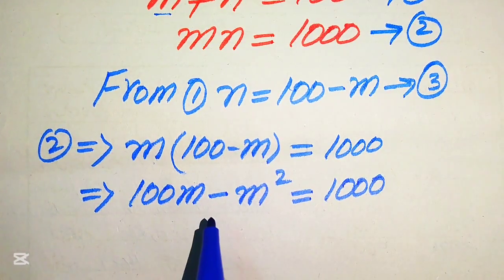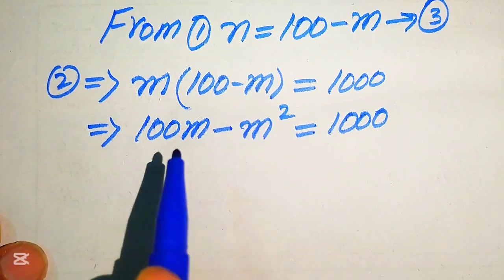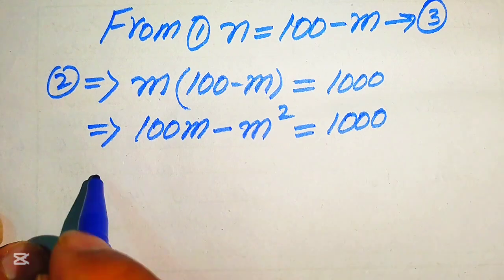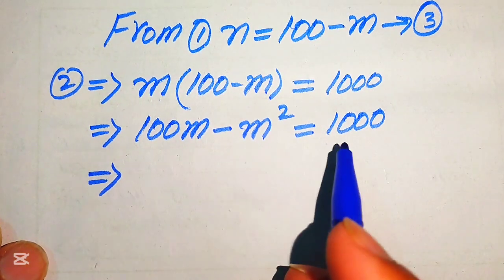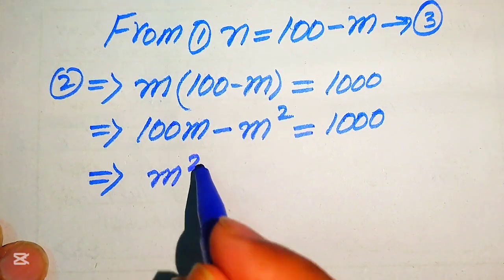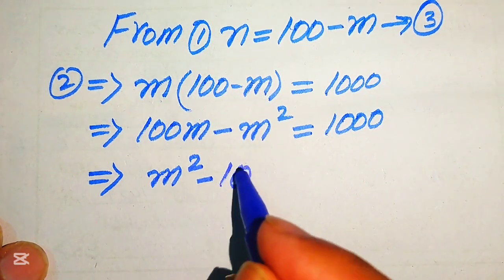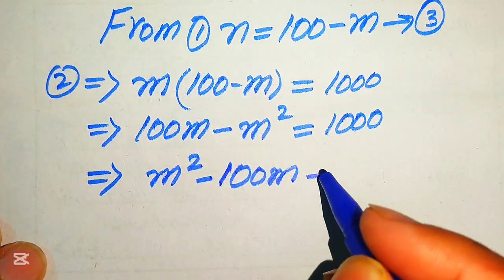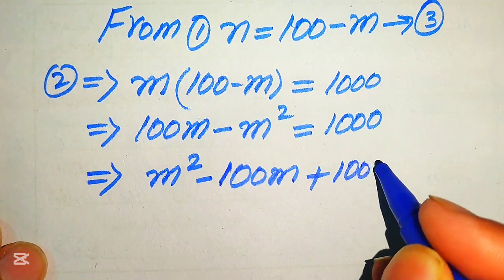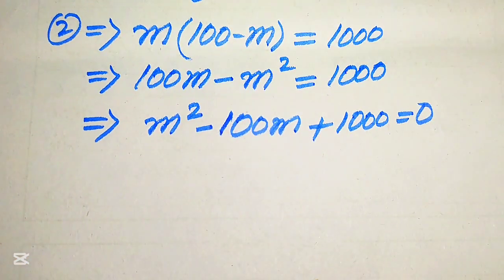Now we need to convert this equation into the standard quadratic form. We move the terms to the right hand side: minus m squared becomes plus m squared, and plus 100m becomes minus 100m, so we have m squared minus 100m plus 1000 equals 0. This equation is now quadratic in m.